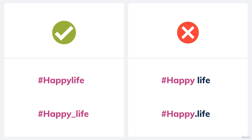Just below that we have 'happy_life' with an underscore, which also qualifies as a hashtag. Now let's look at the wrong ways. Writing 'happy' then a space then 'life' is wrong because the hashtag only applies to the word 'happy' and not 'life' — it would just be hashtag happy, not hashtag happy life. Similarly, 'happy.life' with a dot is also wrong, as the hashtag only works for the word 'happy.' So the moral is: don't use spaces or dots in your hashtag.